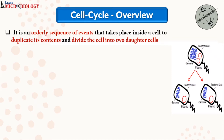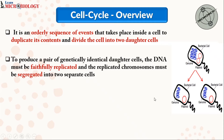Let's take the example of a bacteria cell. As you can see, the genome of the cell and the cytoplasm have been duplicated, and now this will be given to both the daughter cells. To produce genetically identical daughter cells — meaning the genome of the daughter cells is equal to the mother cell — the DNA must be faithfully replicated, as well as the replicated chromosomes must be segregated into two separate cells.